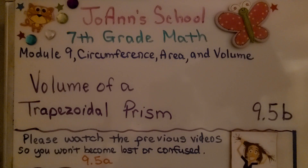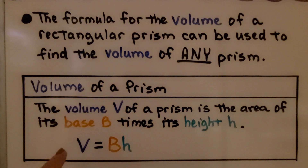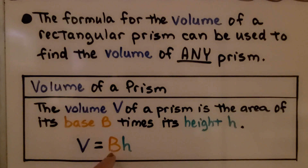Lesson 9.5b: Volume of a Trapezoidal Prism. As we've been learning, the formula for the volume of a rectangular prism can be used to find the volume of any prism. The volume, V, of a prism is the area of its base, B, times its height, H.